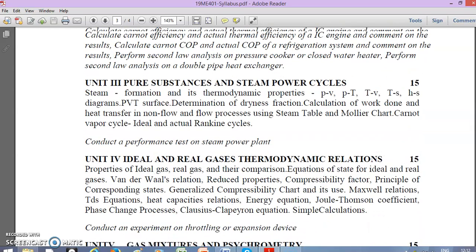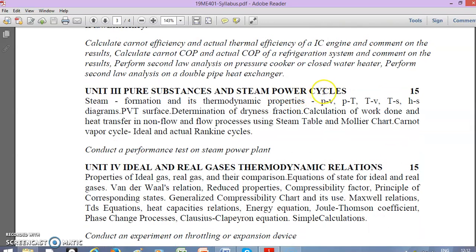Unit 3 is Pure Substances and Steam Power Cycles. We'll discuss various behaviors and properties of pure substances and steam power plants, especially the Rankine cycle. We'll use steam tables and Mollier charts for solving problems. An experiment is included: conduct a performance test on steam power plant.